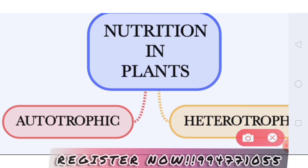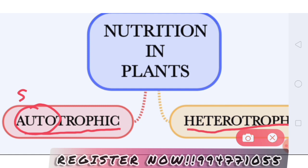Plants are of two types. You have autotrophic plants and you have heterotrophic plants. The word 'auto' means by itself — like in the word 'automobile' or 'autobiography'. The plants that make their own food themselves, we call them autotrophic.